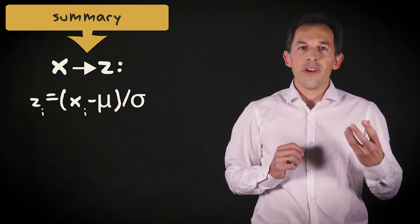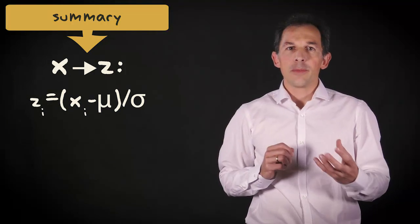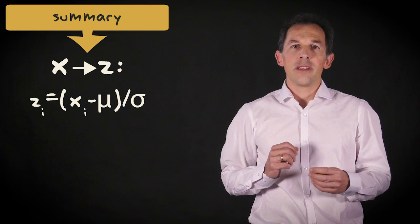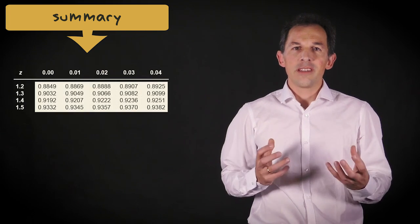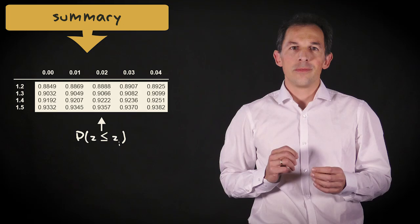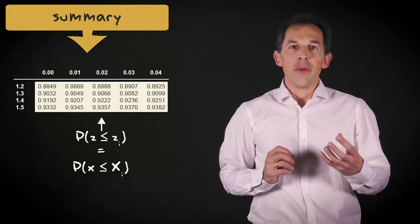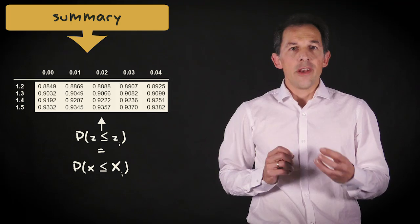For a given value X, you can find the corresponding Z-value by subtracting the mean and dividing by standard deviation. The Z-table provides the cumulative probability matching with the Z-value. This is the probability of encountering a value for the random variable that is lower than or equal to X.